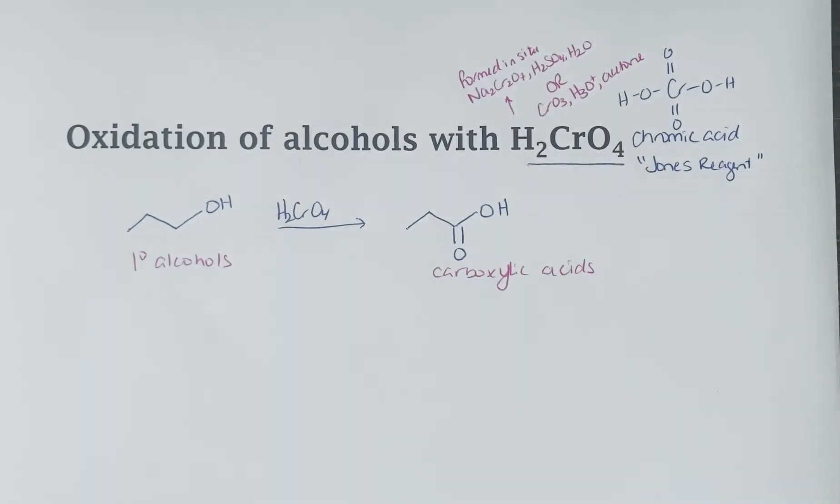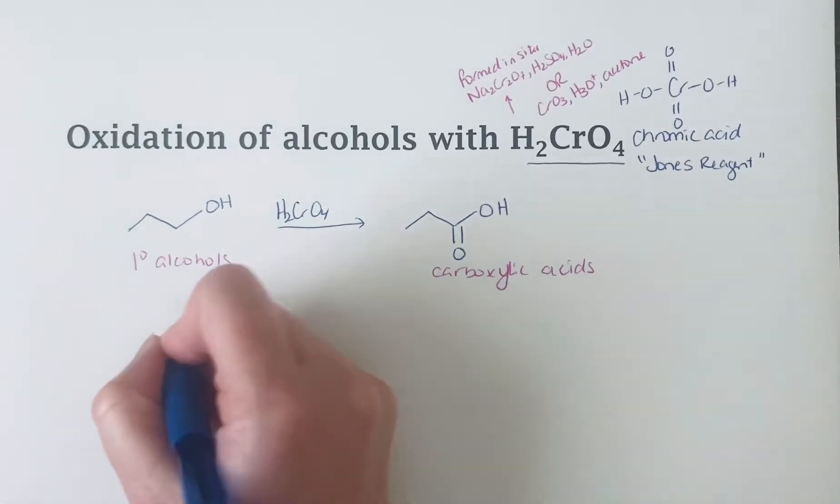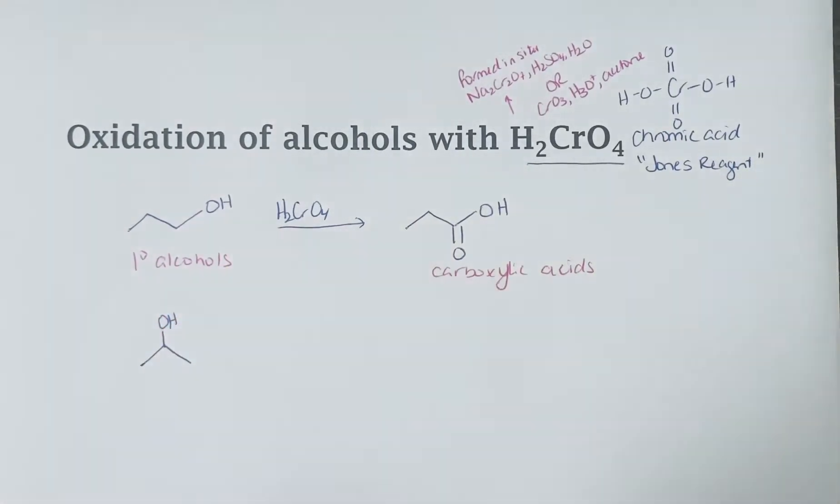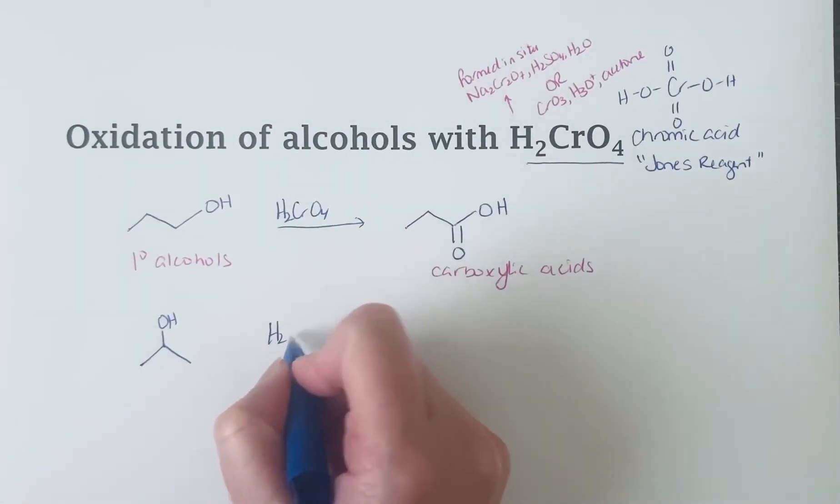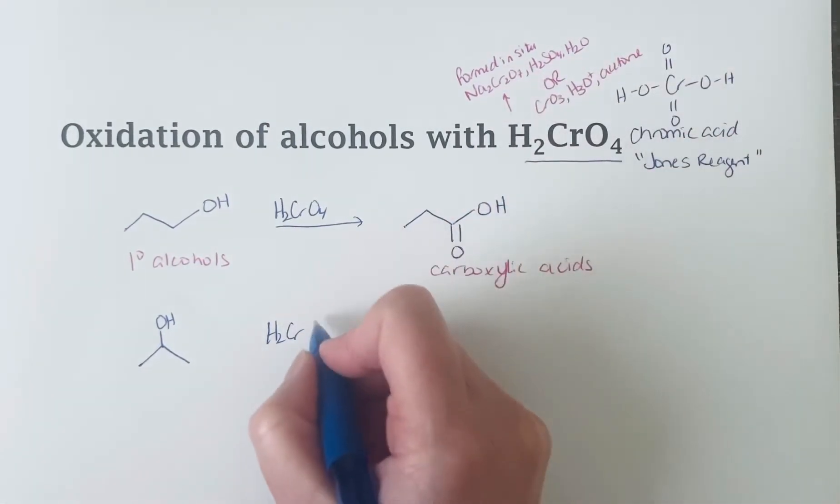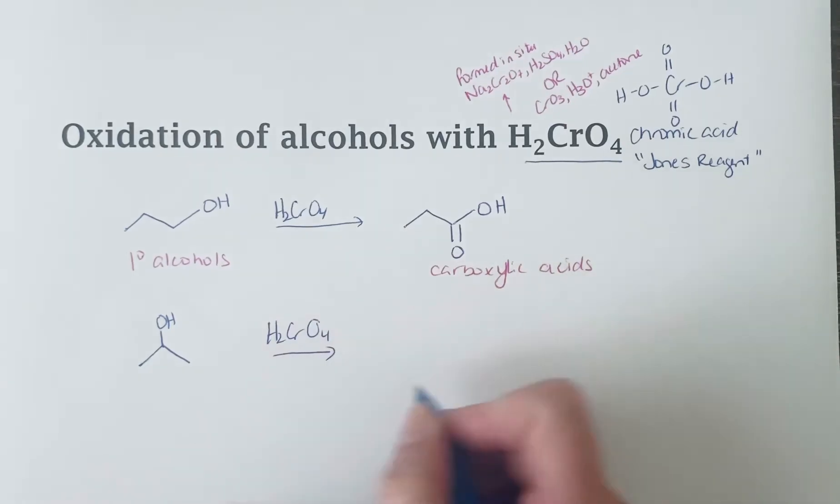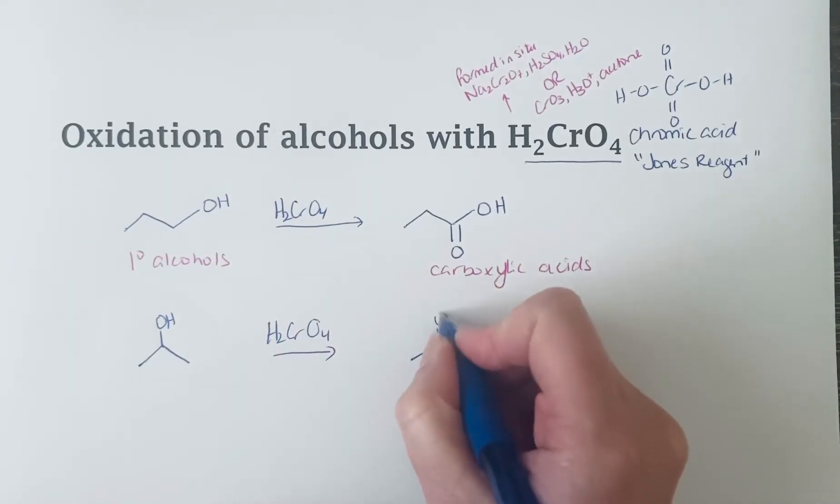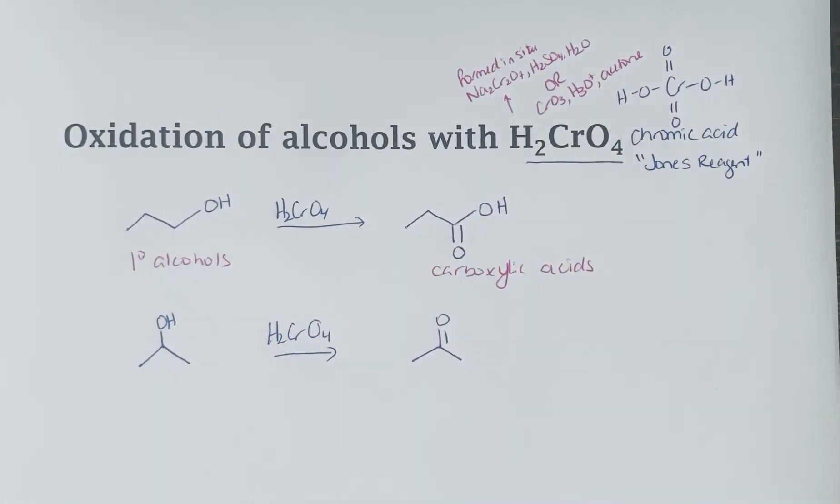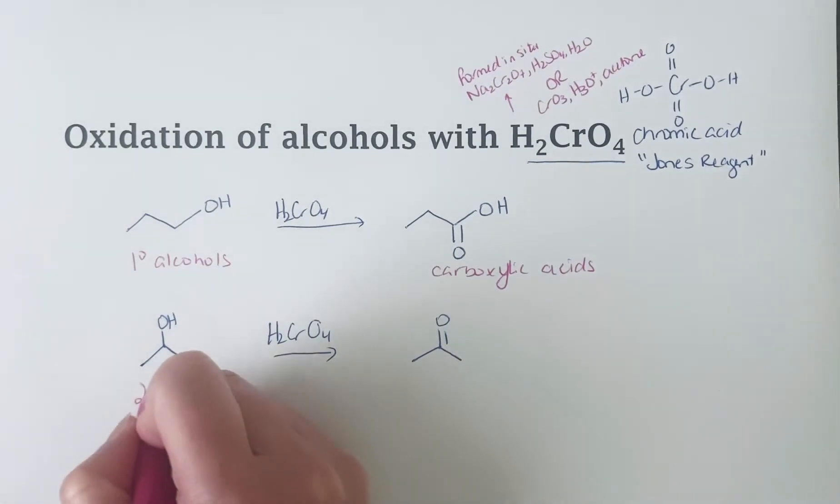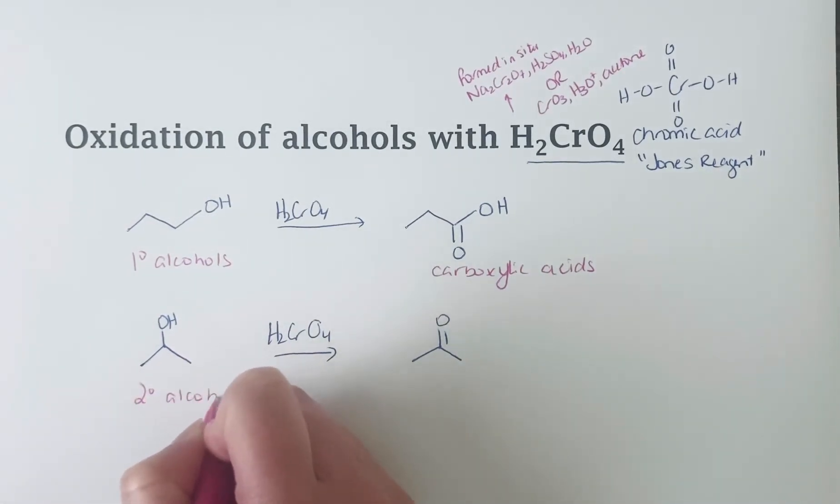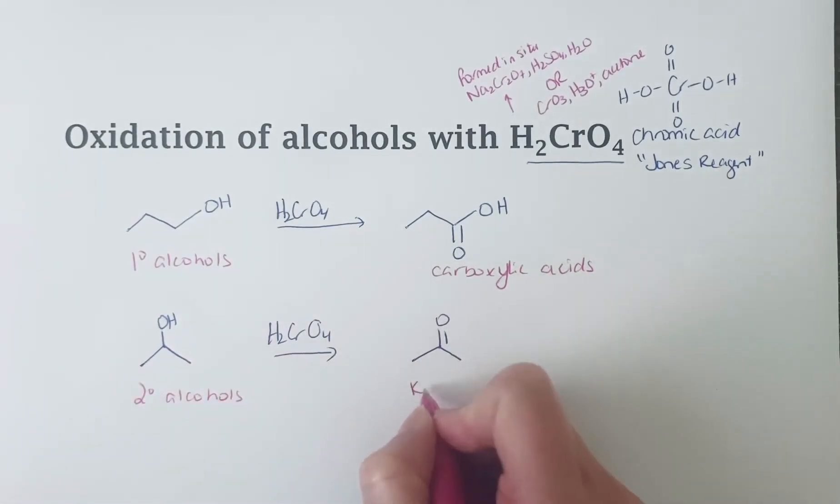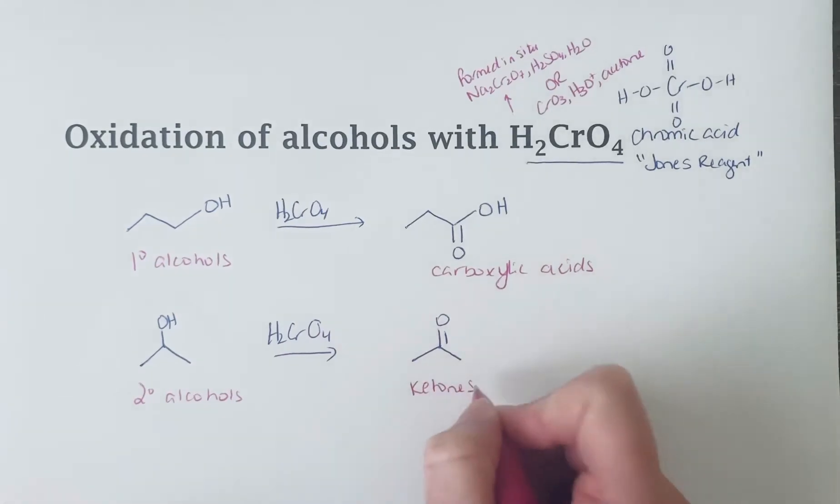If you have a secondary alcohol and you treat it to these Jones reaction conditions, so some source, one of these two mixtures that gives you chromic acid, you will be oxidizing that secondary alcohol to a ketone. So secondary alcohols are oxidized to ketones under these conditions.